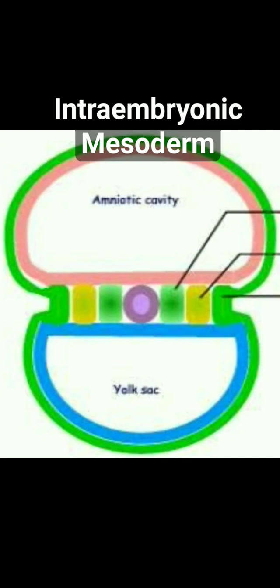This intra-embryonic mesoderm, which is on either side of the notochord, is divided into three parts. The part just next to the notochord is by the side of the axis of the embryo, so we call it paraxial mesoderm. It is also brick-shaped, so we call it somites. Approximately 44 to 46 somites are present on the dorsal aspect.